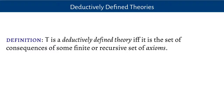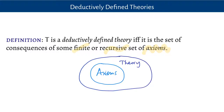A theory is deductively defined if and only if the set of sentences is the set of consequences of some finite or recursive set of axioms. Lots of theories have this form — you've got some collection of fundamental principles, the axioms, and we say anything's in the theory if it is a consequence of those axioms. The key idea is that the question of whether you are an axiom can be decided by some recursive process. We can always have a definitive answer to the question: is this an axiom? That's what we call a deductively defined theory.